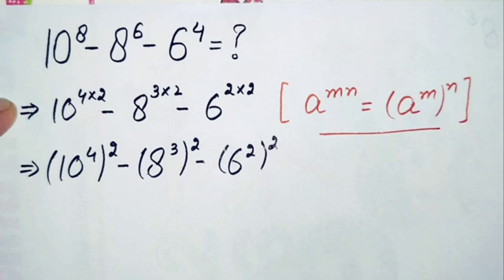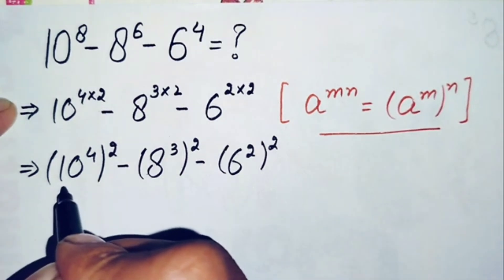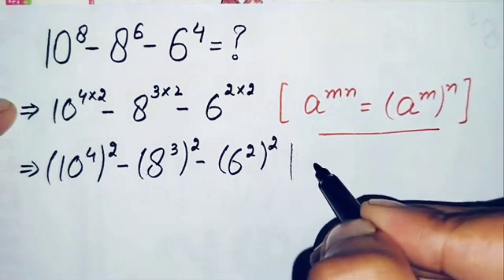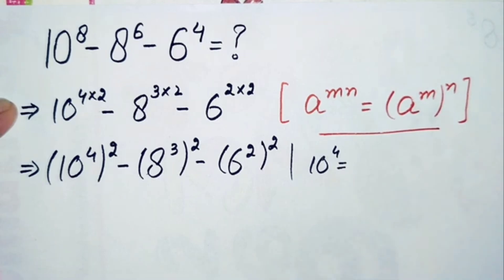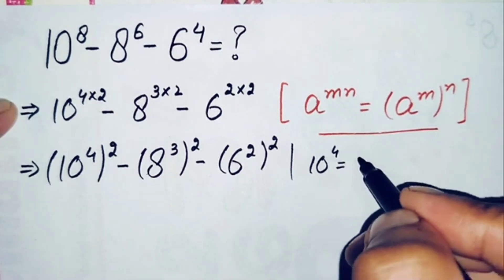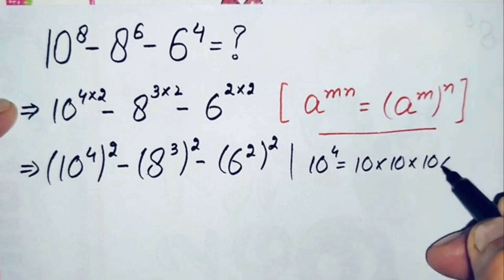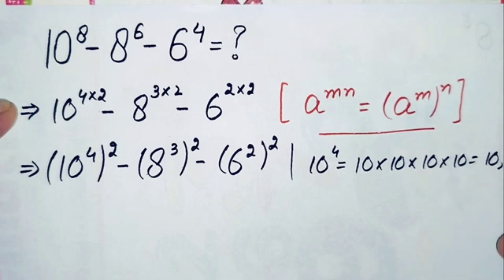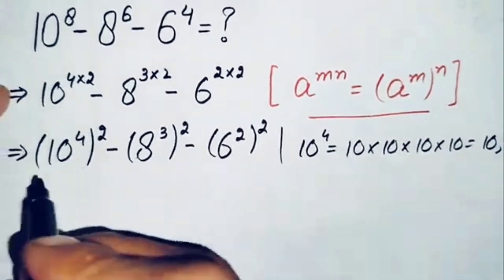Here we will try to find the value of each number inside the parentheses. First we will find the value of 10 raised to power 4. 10 raised to power 4 means we multiply 10 four times: 10 times 10 is 100, 100 times 10 is 1000, and 1000 times 10 is 10,000. So the value of 10 raised to power 4 is 10,000, and we replace 10 raised to power 4 with 10,000.